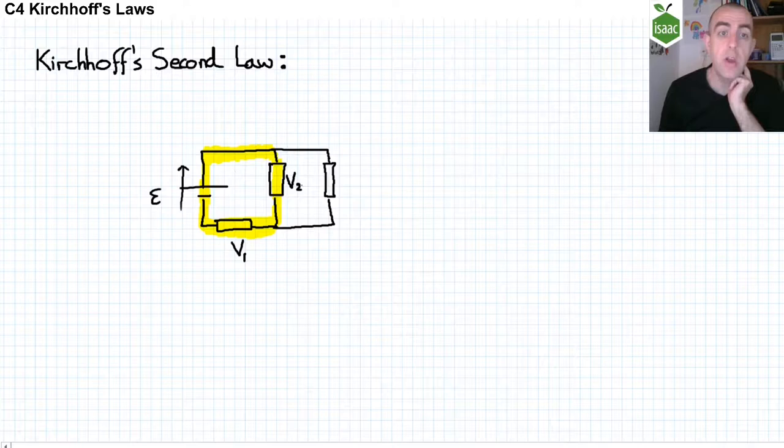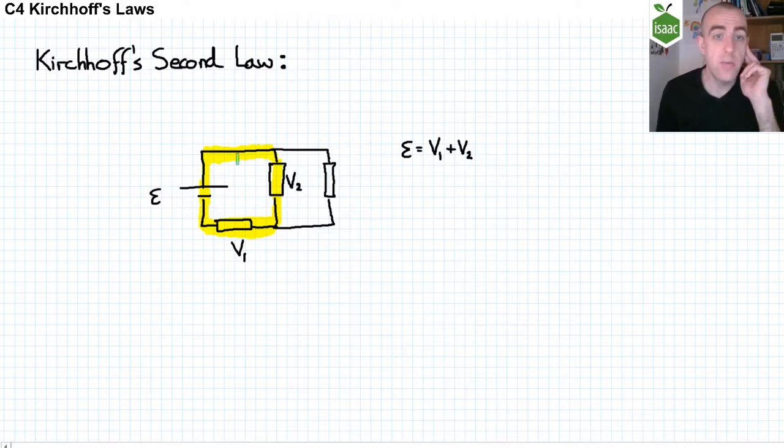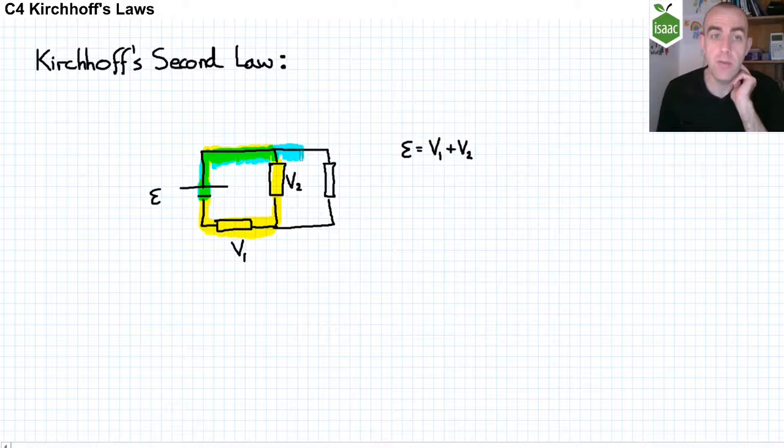This is conservation of energy. Remember that the definition of potential difference is the work done per unit of charge. In the second loop, we start from the power supply. So we pick up epsilon joules per Coulomb, so epsilon volts. And then as we pass through this circuit, we pass through this second resistor before returning and passing through that first resistor.